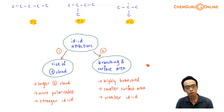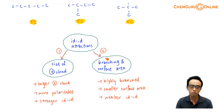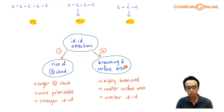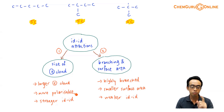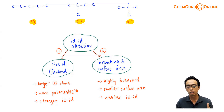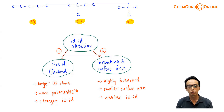Let us consider the factors affecting ID-ID attraction — what affects the interaction between non-polar species. There are two factors: first, the electron cloud size. If you have a bigger electron cloud, it will be more polarizable, so the ID-ID will be stronger and the boiling point will be higher. The molecule with a bigger electron cloud size will have stronger ID-ID, requiring more energy to overcome the attraction, so the boiling point will be higher.